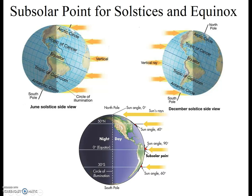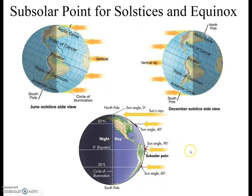On the June solstice, roughly June 21st, the vertical rays of the noon Sun strike at the Tropic of Cancer, 23 and a half degrees north. On the December solstice, roughly December 20th, the vertical rays of the Sun strike at the Tropic of Capricorn, 23 and a half degrees south. And at both equinoxes, roughly March 20th and September 22nd, the vertical rays of the noon Sun strike right at the equator.